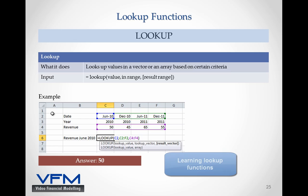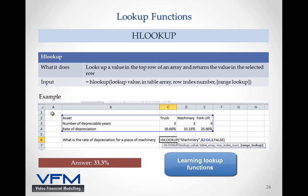Now let's go back to our reference guide and let's look at the HLOOKUP. Basically, HLOOKUP looks up a value in the top row of an array and returns the value in the selected row. Let's look at the example. It says what is the rate of depreciation for a piece of machinery?